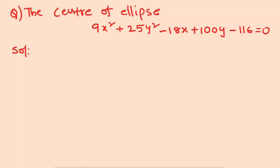This is a very easy problem. The original process is a long process, but we will use a shortcut method. For finding the center of the ellipse or hyperbola, we use the same procedure — we find the H value and K value.